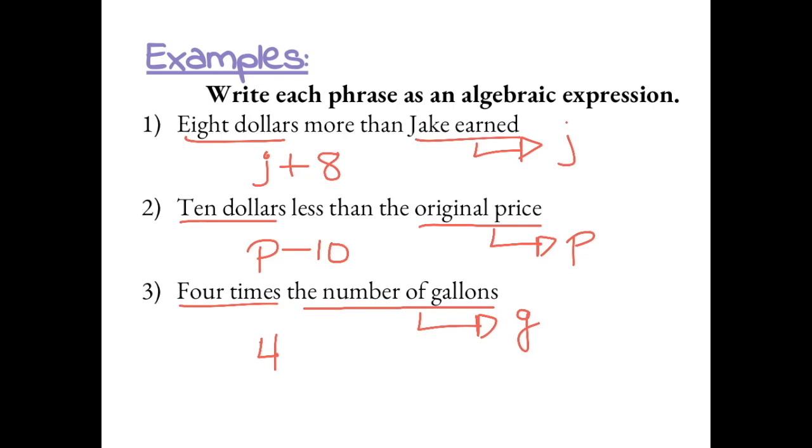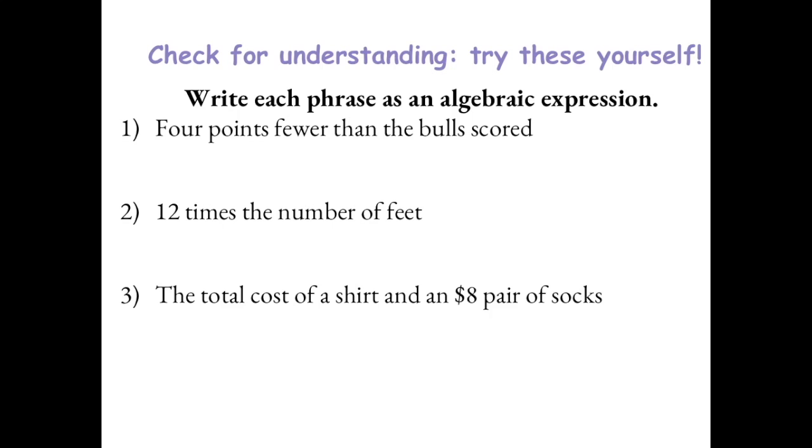So 4 times G, which can be written as 4G. Pause the video here to check for understanding and try these yourself. Remember, our variables might be different, but as long as the expression is written the same, then your answer is still correct.